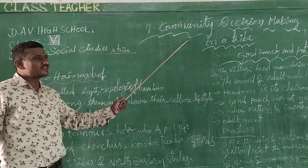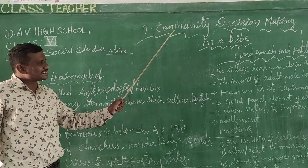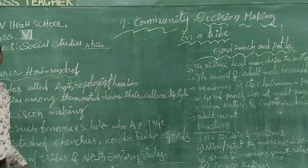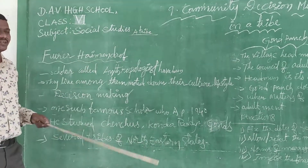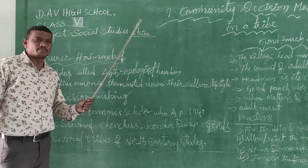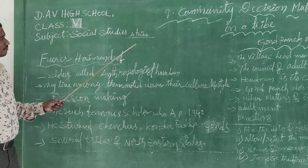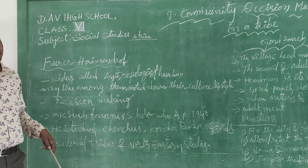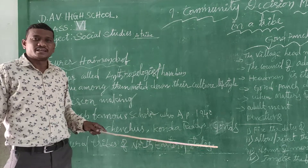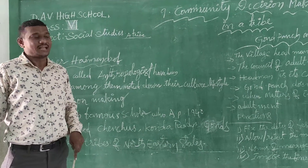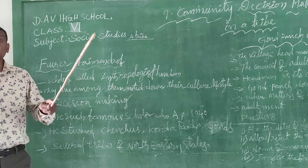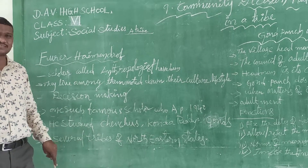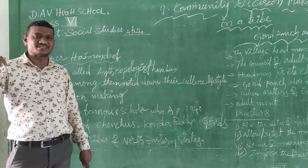I am going to come back to the second session of this sixth class, 9th lesson: community decision making in a tribe. How are decisions made among tribal people? I am going to discuss with children what are the characteristics of tribal people. Tribes are well settled in several villages, inhabited in large areas. How do tribes take decisions among themselves and how do they solve and settle the disputes among themselves? These topics were well discussed in the previous lesson.